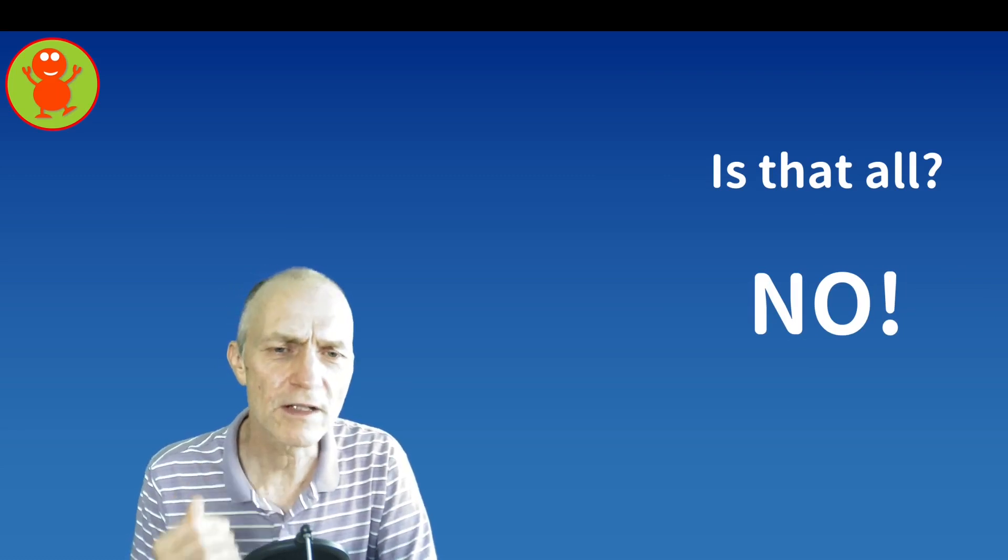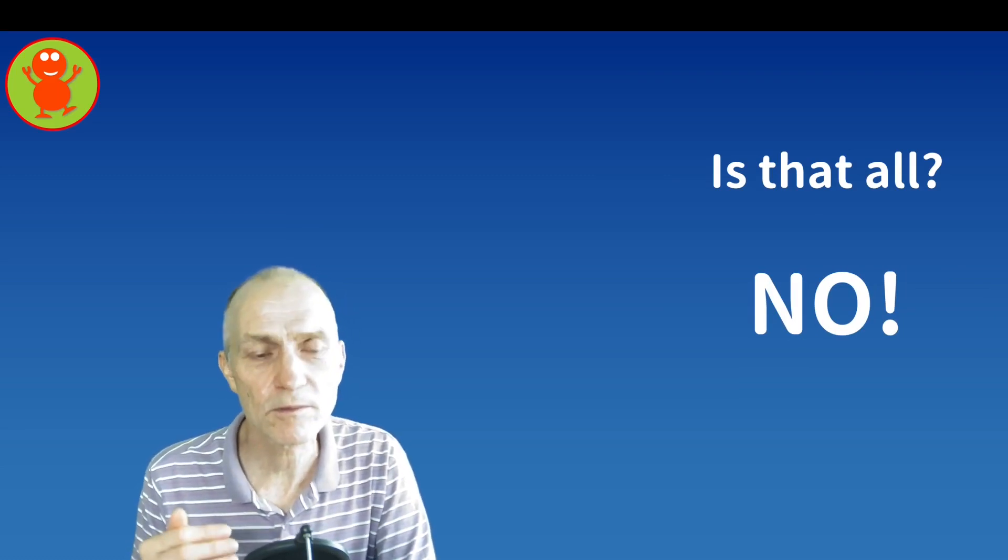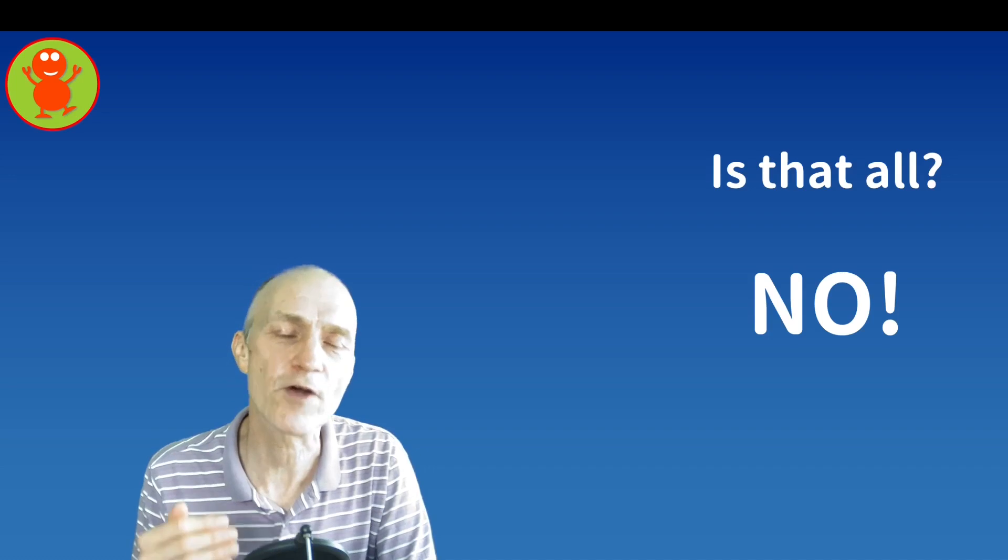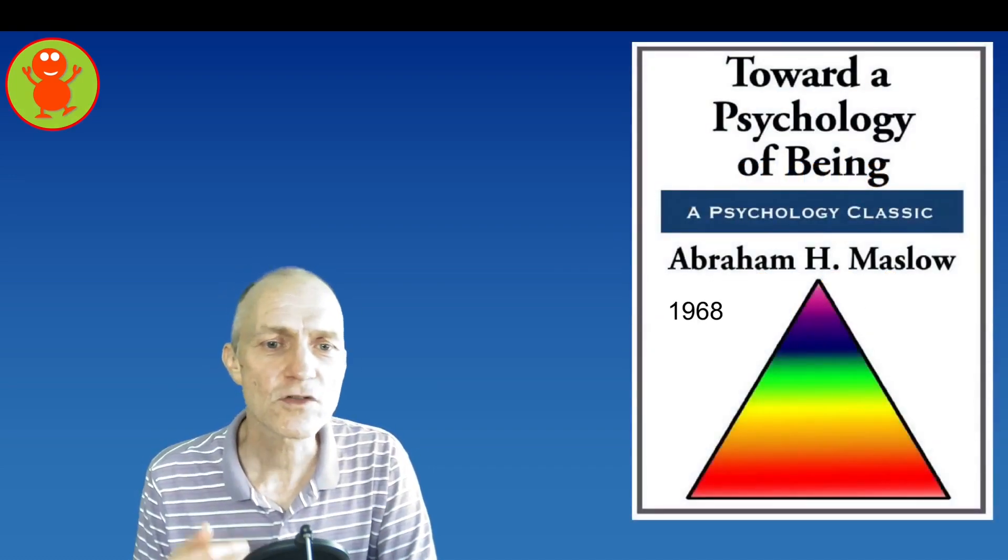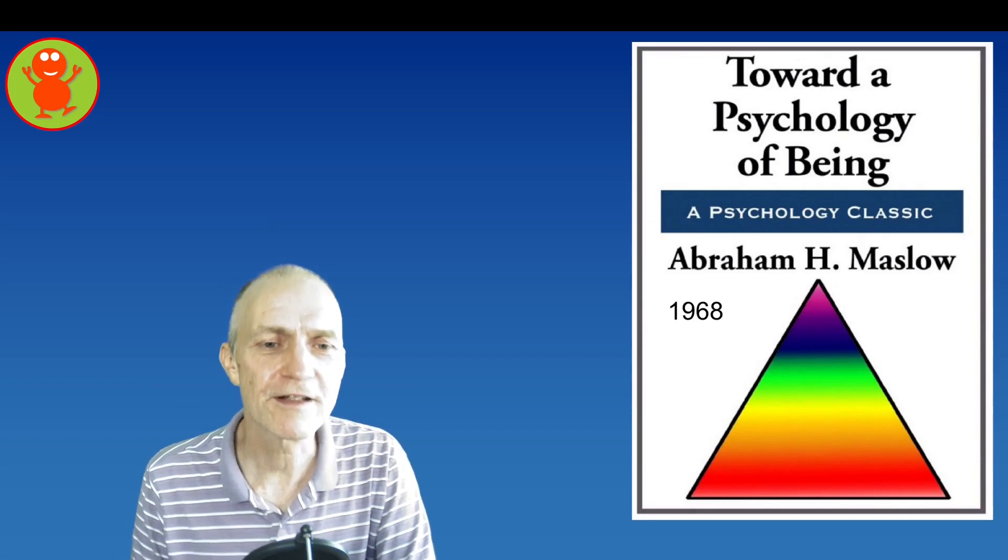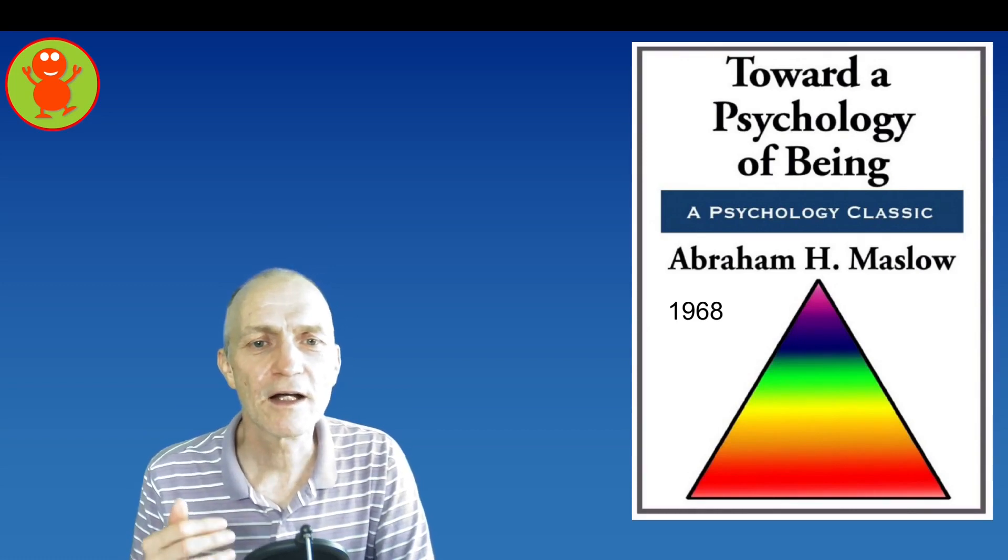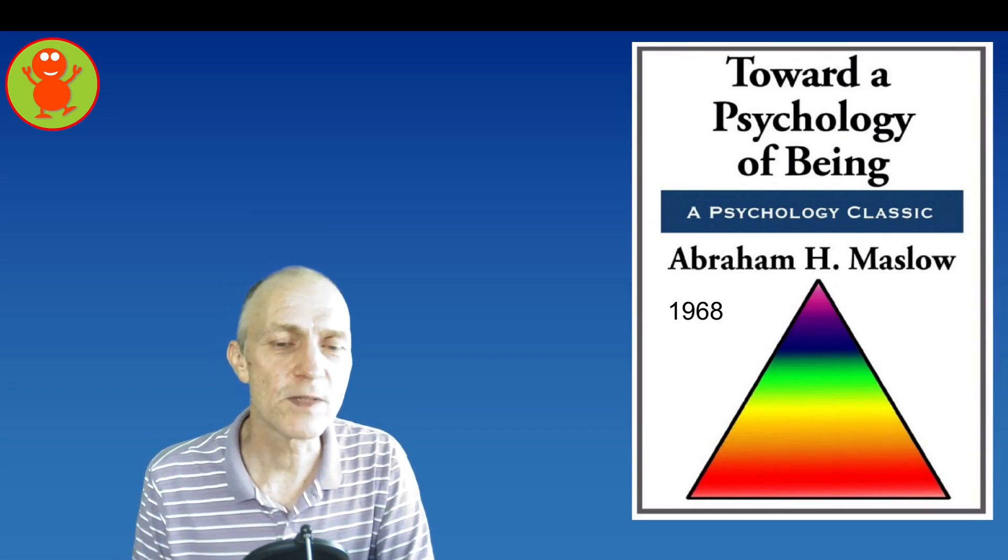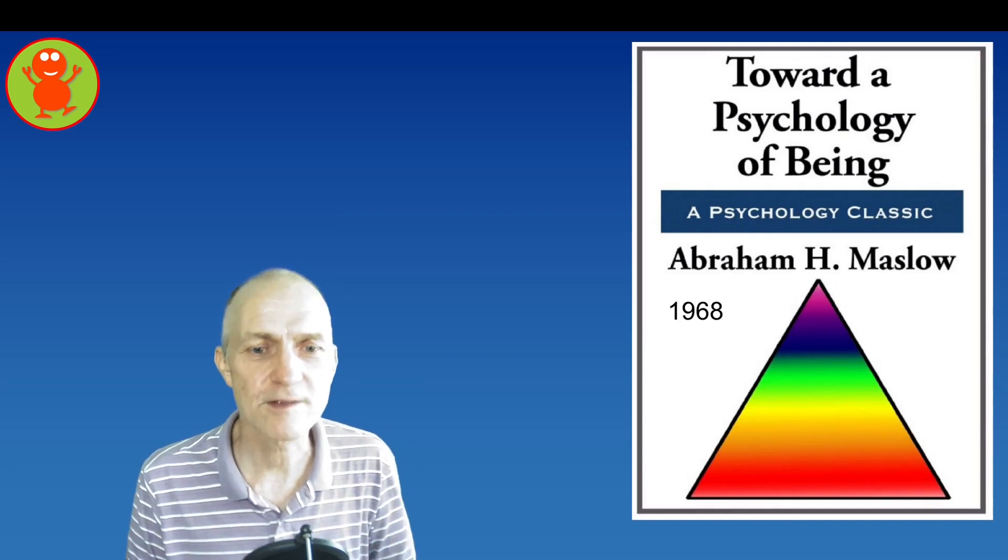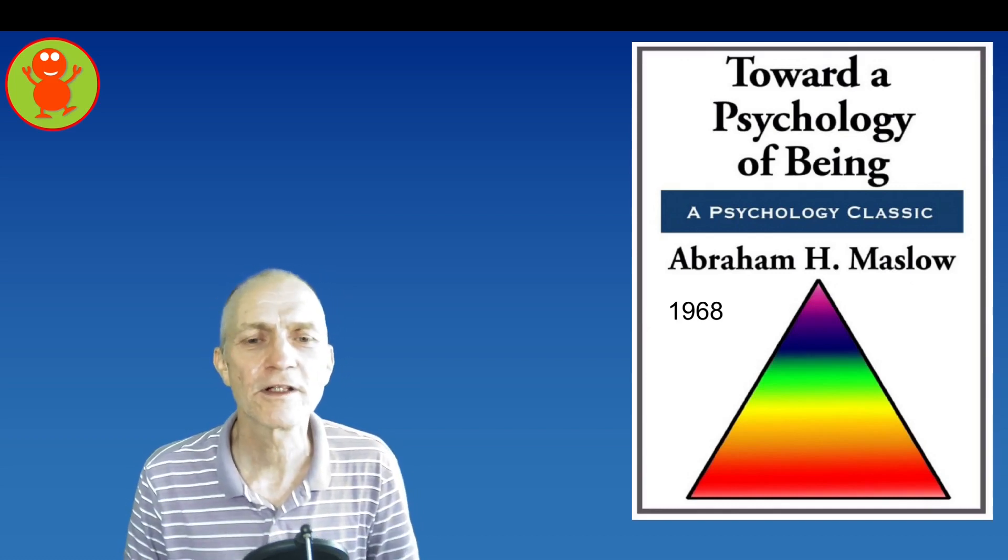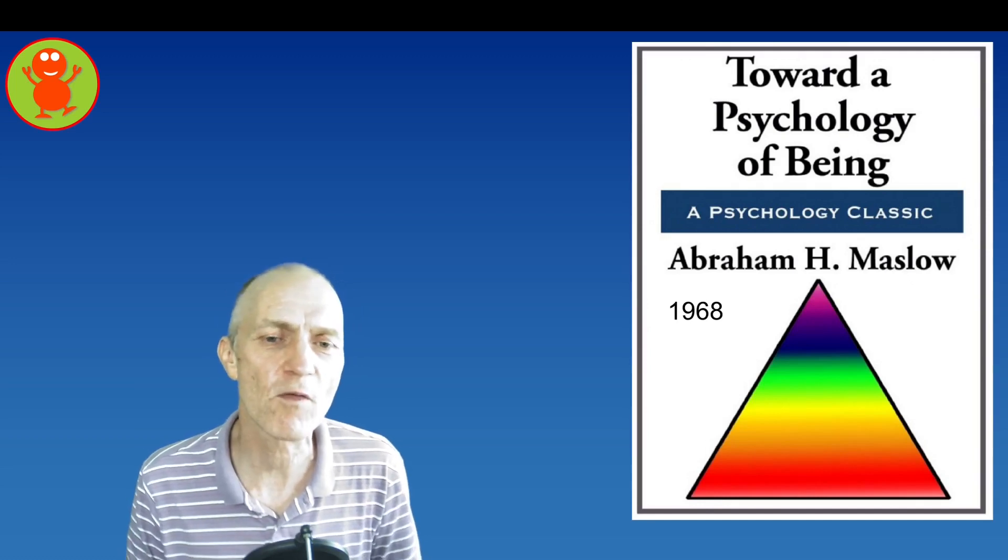Now is that all? No, not at all. Actually Maslow of course was in his 30s when he wrote the 1943 paper and he has done more work. An influential book written in 1968 called Toward a Psychology of Being has the pyramid on the cover. It's interesting, he certainly developed his own thinking.